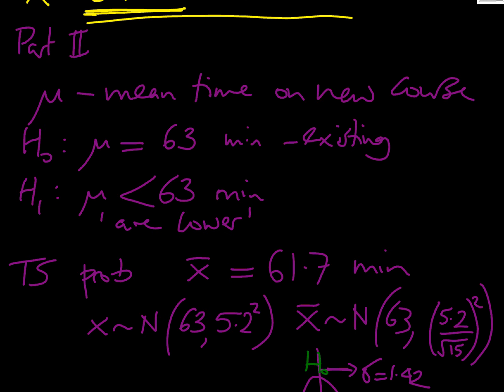Part two, the first thing we want to do is define what we're going to use. We're interested in the mean. Our H0 is that the mean is unchanged at 63 minutes, because that allows us to do all our calculations reliably. We define mu as the mean time on our new course. We get a mark for writing that. Our null hypothesis is the status quo, that the mean is 63 minutes. Our H1, we were interested in it being lower, the times were lower. Therefore, we're going to use mu is less than 63 as our H1.